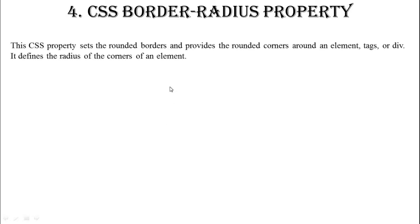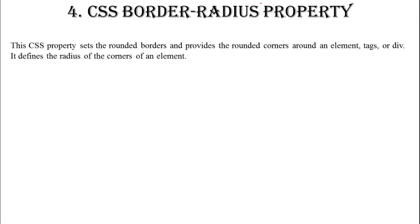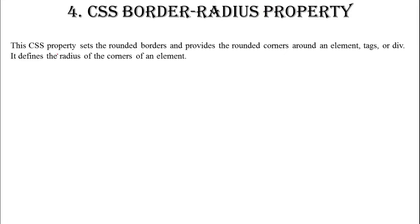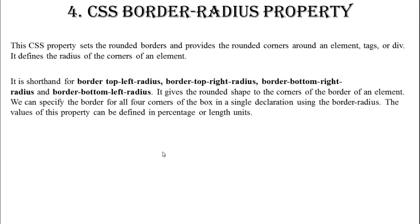Now, the CSS border-radius property — this is an important property through which you can create different types of boxes. The CSS border-radius property sets the rounded border and provides rounded corners around an element text. For example, a square border can be made into a round border. The border-radius defines the radius of the corner of the element. You can reduce the radius value as needed.